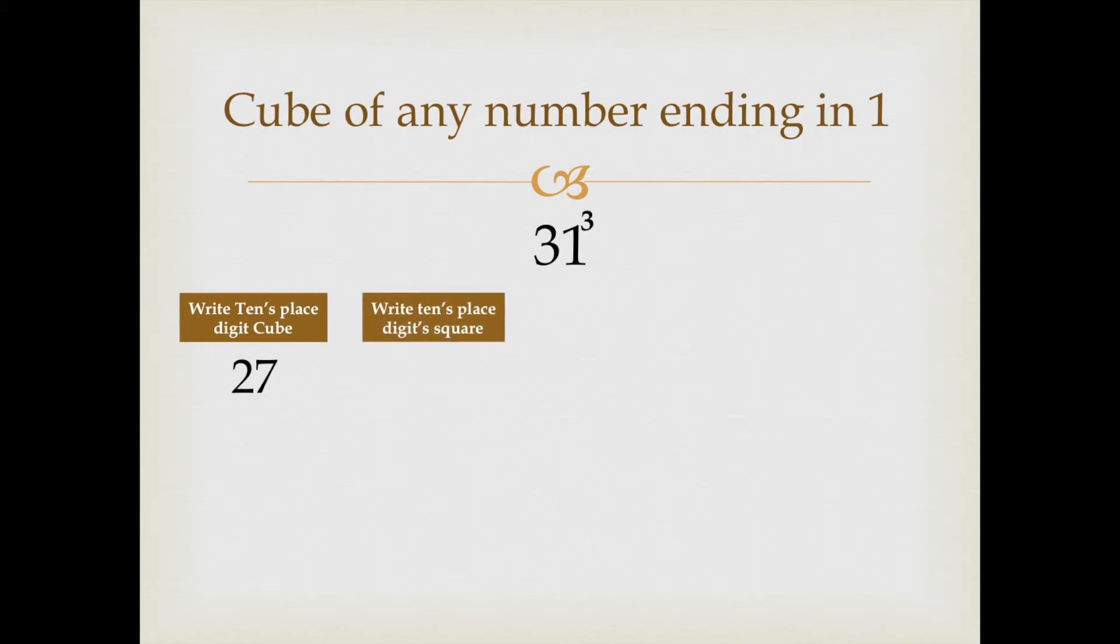In the second part, we would write down the square of the 10th place digit. The square of 3 is 9. Write 9.